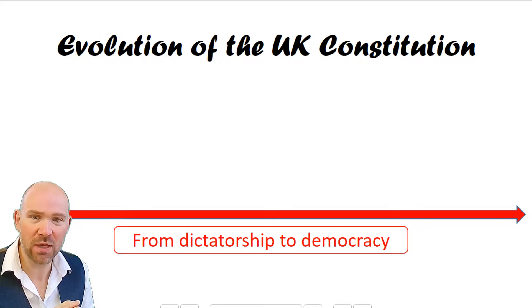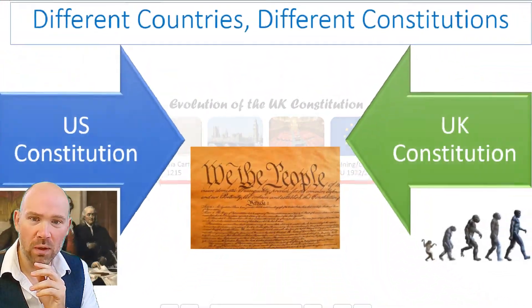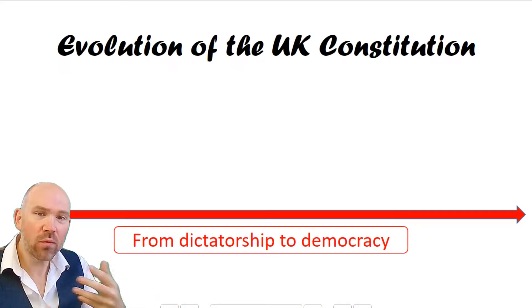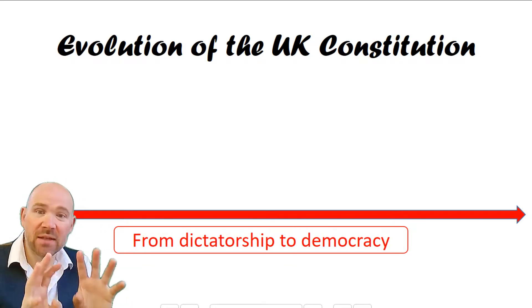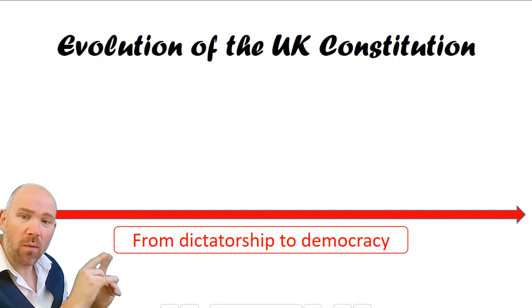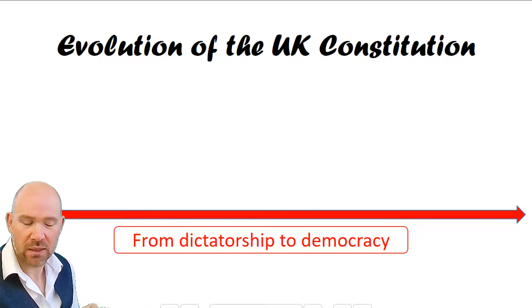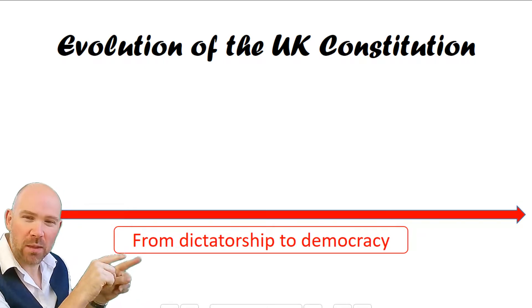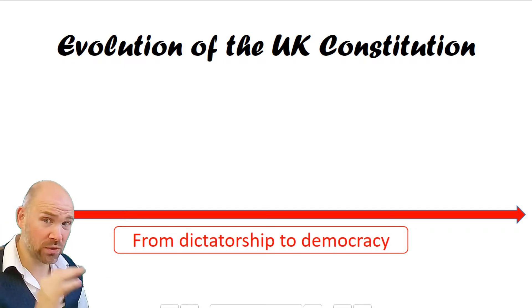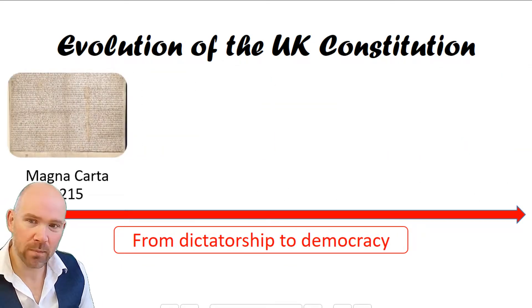So let's look at how the UK Constitution has evolved. The UK has effectively gone from dictatorship — think William the Conqueror — to democracy. The more technical term is probably from monarchy to democracy, but we'll go with dictatorship to democracy. There are loads of changes I could list, but I'm going to pick out a big four. The first major one would be Magna Carta in 1215.